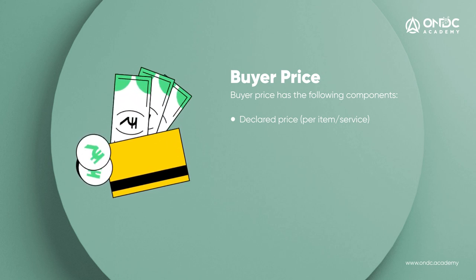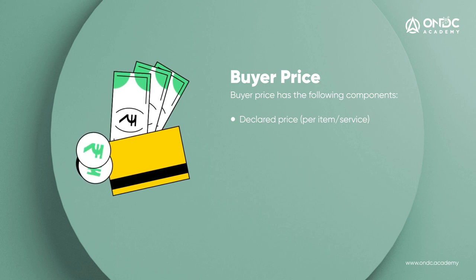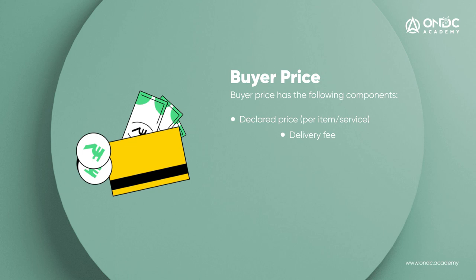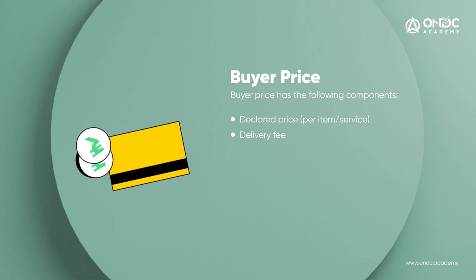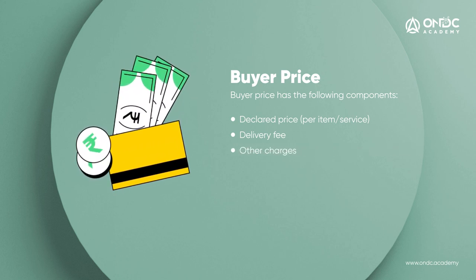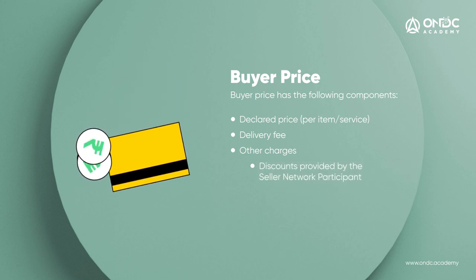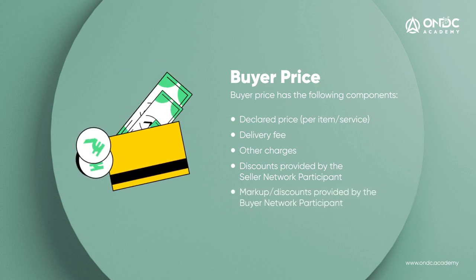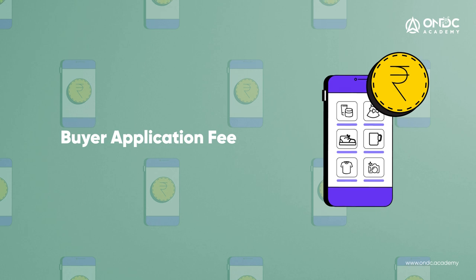Together, these five elements constitute the total buyer price on the ONDC network. The declared price, which includes GST, is the final price declared and listed by the seller on the seller application — this price should never exceed the maximum retail price (MRP). The delivery fee is charged for delivery services, packaging and convenience fees make up other charges, and discounts provided by either the seller network participant or the buyer network participant are also included.